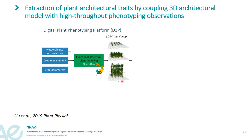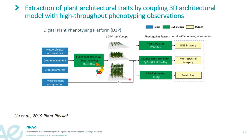These canopies are analyzed using simulators of RGB, multispectral, or LiDAR sensors, which produce images and point clouds of the canopies, which are then analyzed using different types of radiative transfer models to estimate canopy state variables and parameters.